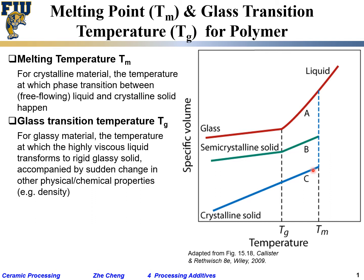At Tm, we go through a sudden change in density or specific volume. In most cases, the material in solid state is denser — ice and water are an exception. Below the melting temperature, the lower the temperature, the denser the material gets, and the specific volume becomes lower and lower. That's thermal expansion working in reverse — makes sense.